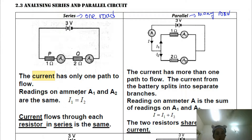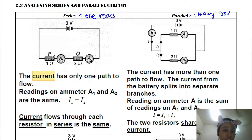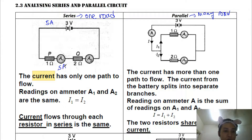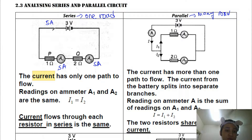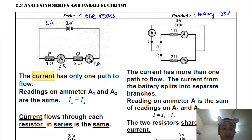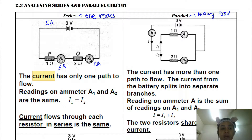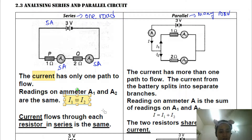All electrons move along this single path, so your ammeter readings will always be the same in a series circuit. For example, if A1 reads 5 amperes, then A2 also reads 5 amperes. If there are 50 electrons, all 50 pass through A1 and A2. So remember: current is always the same in a series circuit.